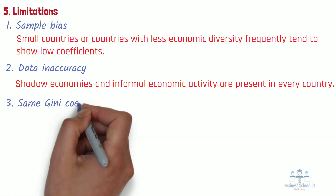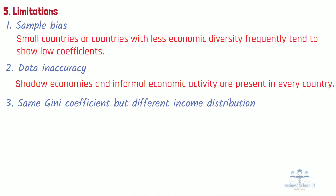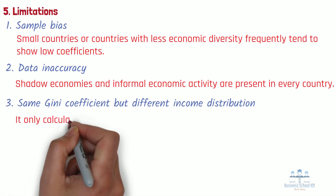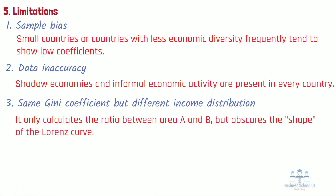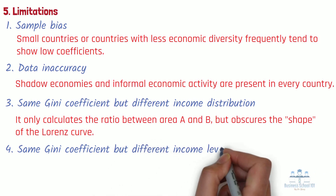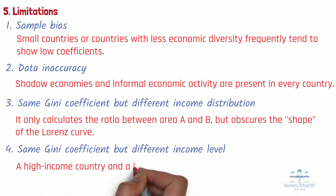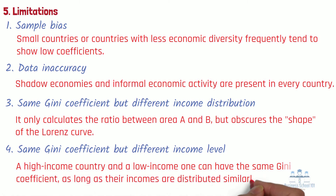Third, same Gini coefficient but different income distribution: in some cases, the coefficient can be the same for countries with different income distributions, because it only calculates the ratio between area A and B but obscures the shape of the Lorenz curve. Fourth, same Gini coefficient but different income level: a high-income country and a low-income one can have the same Gini coefficient as long as their incomes are distributed similarly. For instance, Turkey and the U.S. both have similar income Gini coefficients despite Turkey's vastly lower GDP per capita.